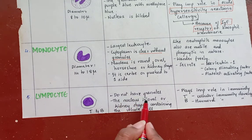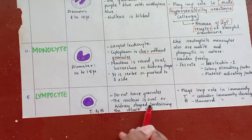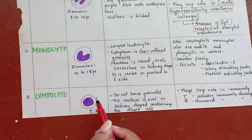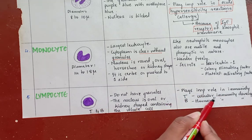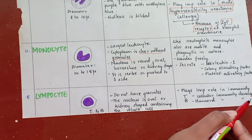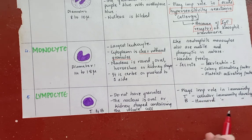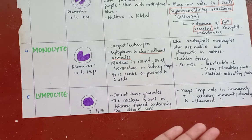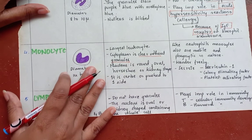Fifth, we come to the lymphocyte. These also do not have granules. The nucleus is oval or kidney shaped and occupies the whole cell, with clear cytoplasm. Lymphocytes play a very important role in immunity — T lymphocytes are involved in cellular immunity development and B lymphocytes cause humoral immunity development. These will be studied in more detail in the immunity chapter.